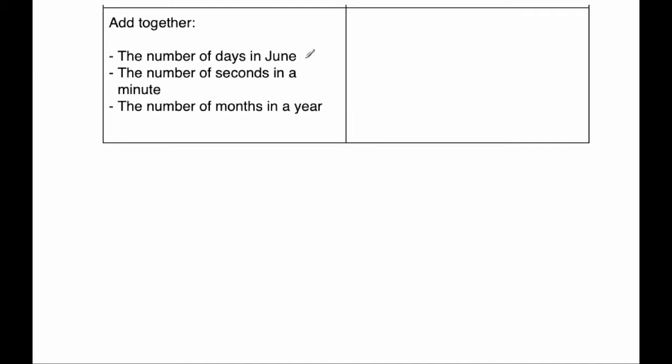Next, add together the number of days in June, that's 30, the number of seconds in one minute, that's 60, and the number of months in a year, that's 12. So 30 plus 60 plus 12. When we do that we get 0 plus 0 plus 2 is 2, and 6 plus 3 is 9 plus 1 is 10, so the answer is 102.